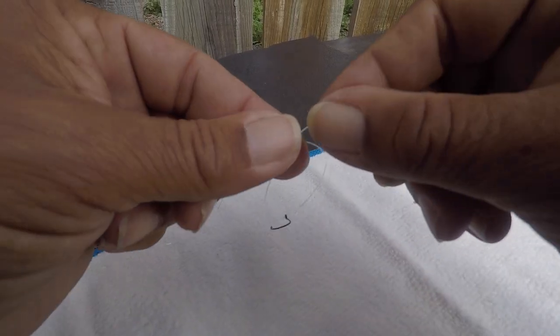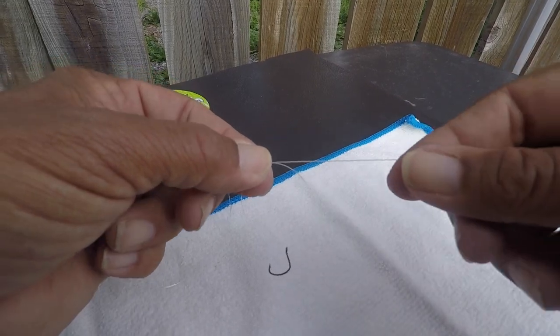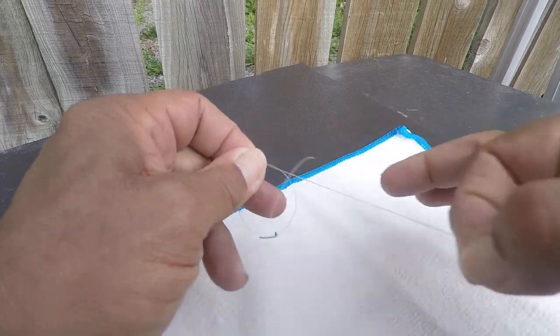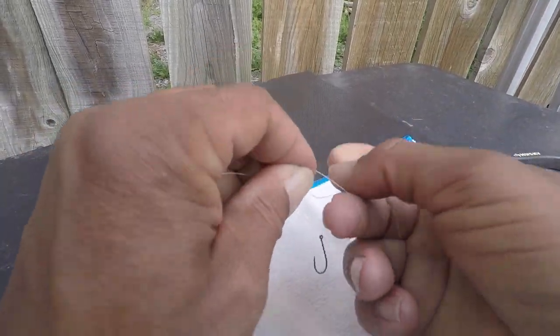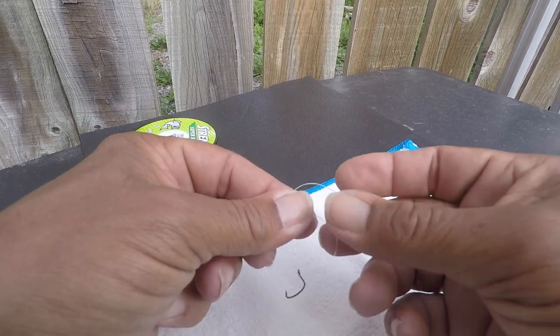Now what we want to do is we want to make a loop, like that, and we'll take our tag in and we want to go through the loop two times, one, two, and before we go any further we want to make sure we leave ourselves a little gap.